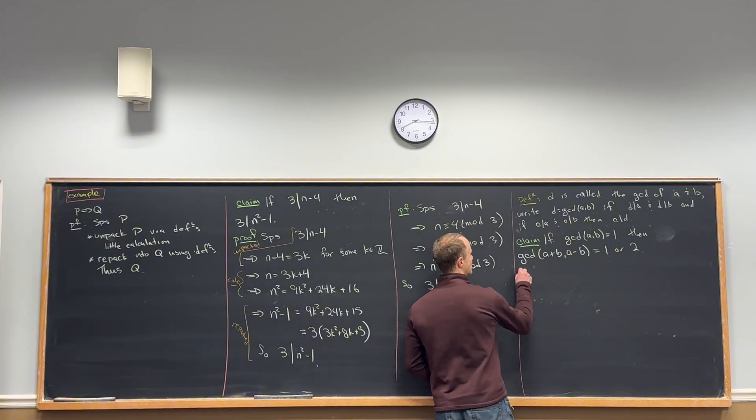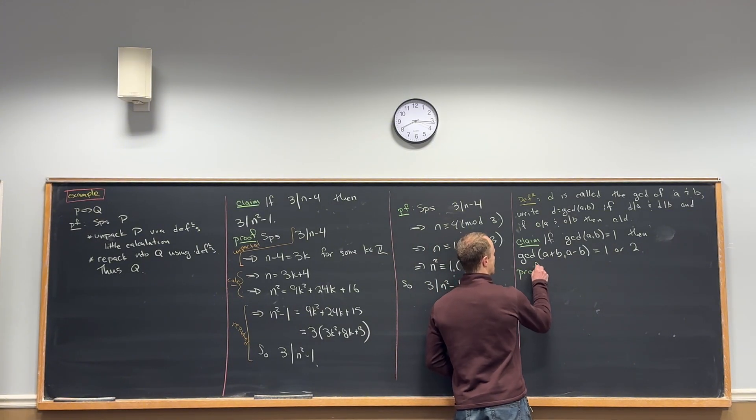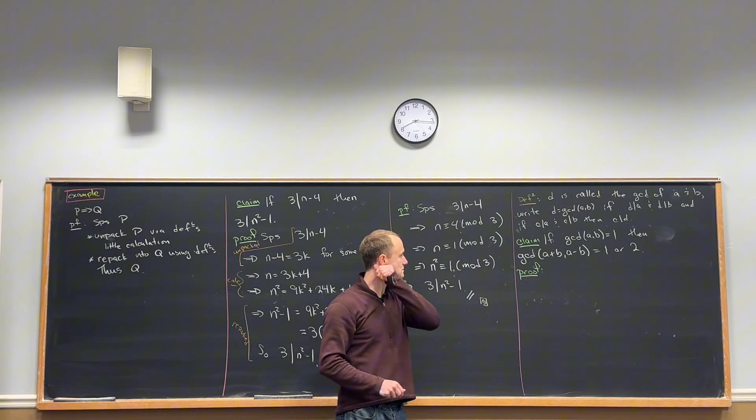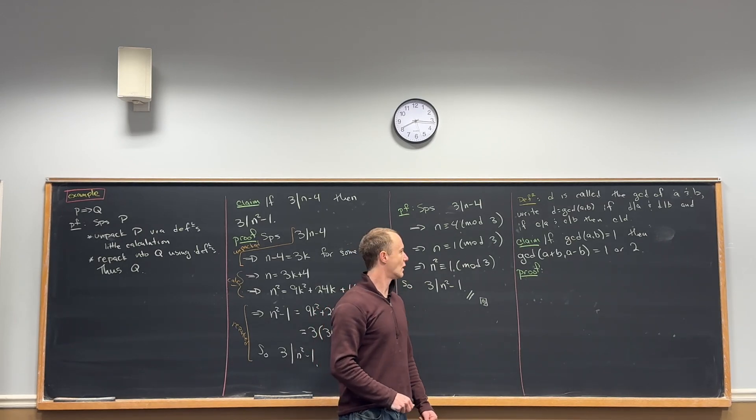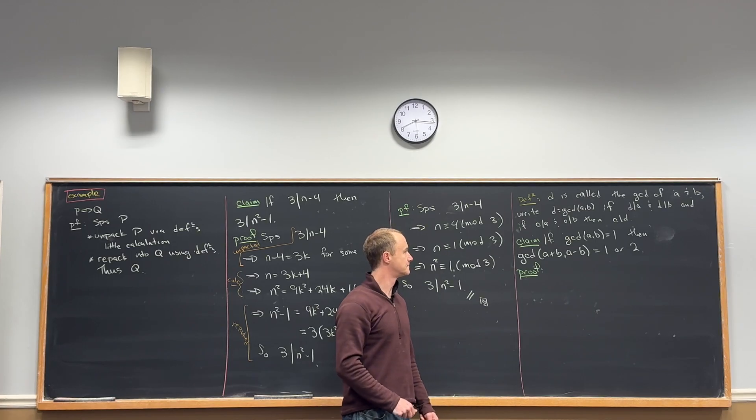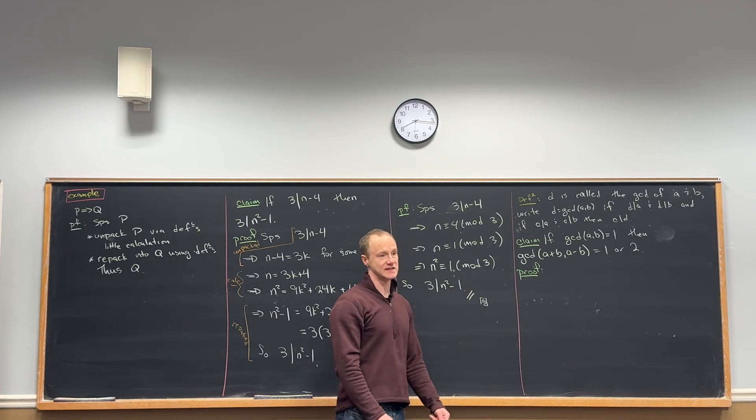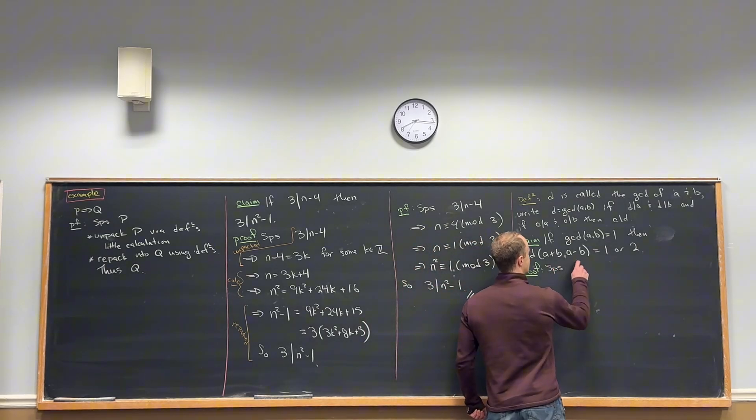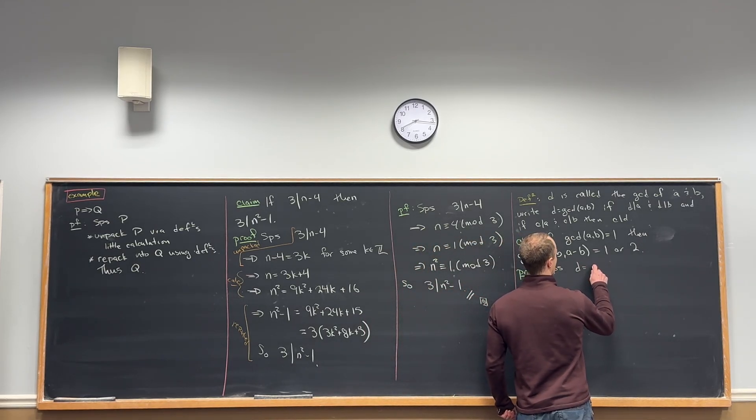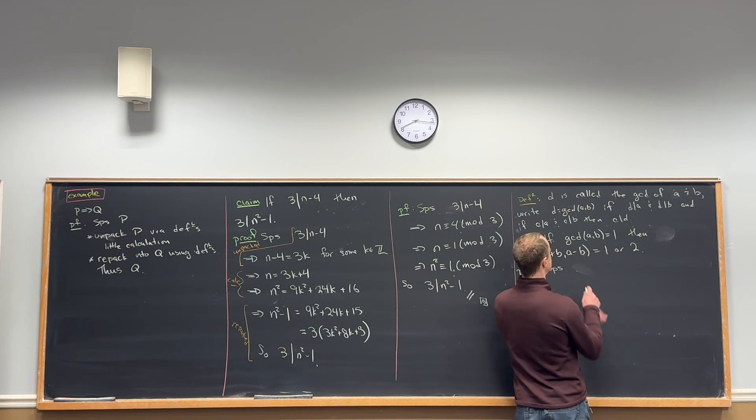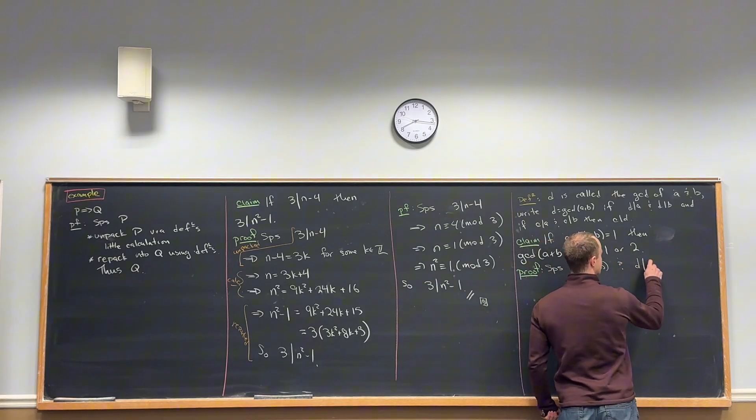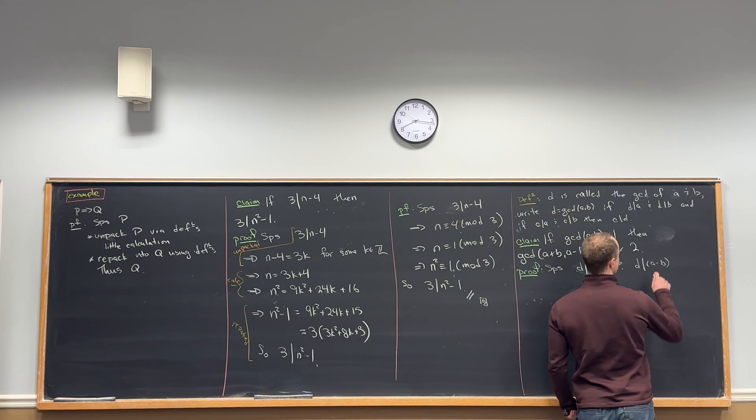But how do we prove that those are the only possibilities? What we'll do is suppose we've got the GCD and prove that that GCD has to be 1 or 2. Let's suppose that D divides A plus B and D divides A minus B.